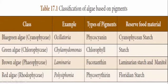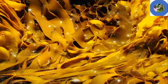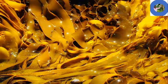Brown algae belong to Phaeophyceae. An example is Laminaria. The type of pigment present is phycoxanthin. The reserve food material is laminarian starch and mannitol.